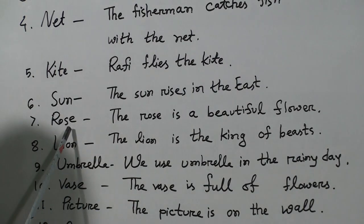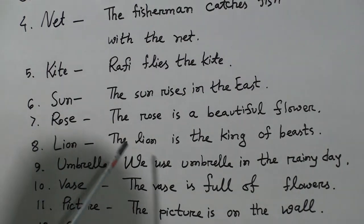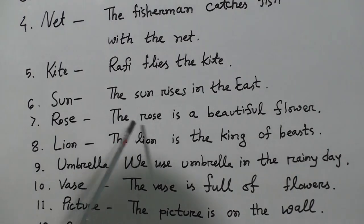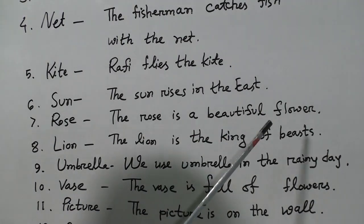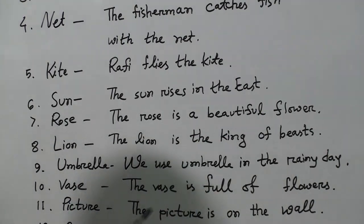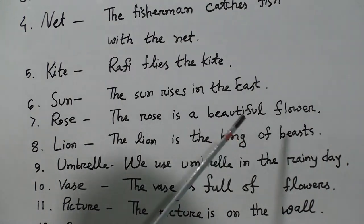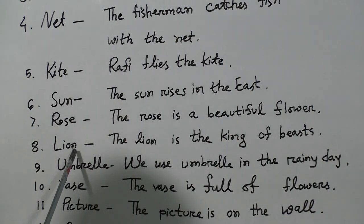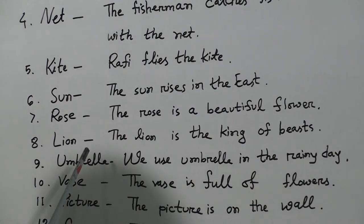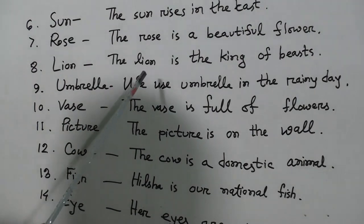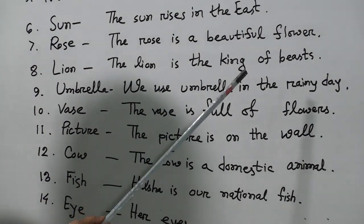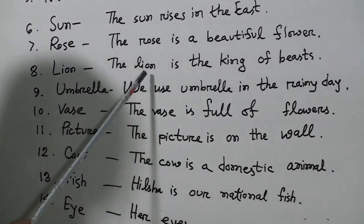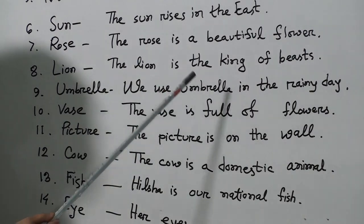Rose. Rose artho chhe gulab. The rose is a beautiful flower. Gulab eki shundar full. Lion. Lion māne hauché shīngha. The lion is the king of beasts. Shīngh hauché pashuder shāra.